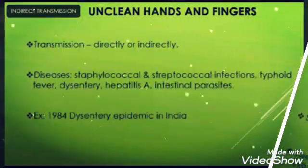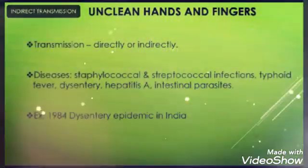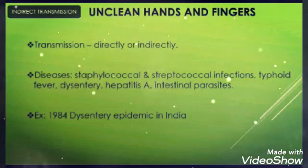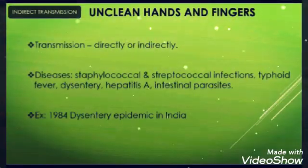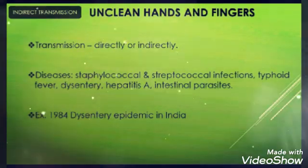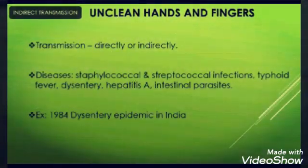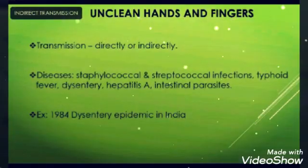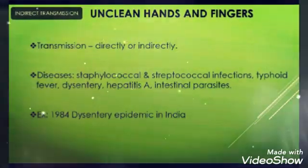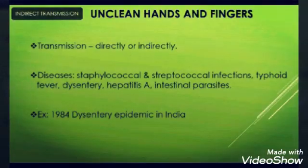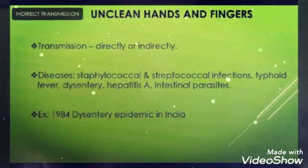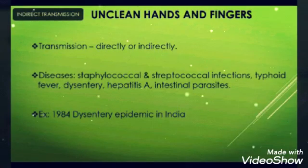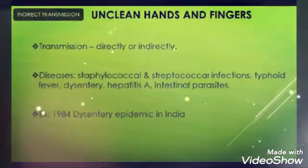Transmission via unclean hands and fingers: whenever we do not maintain personal hygiene, we can get certain disease conditions, which is counted as indirect transmission or secondary infection transmission. Diseases include staphylococcal and streptococcal infections, typhoid fever, dysentery, hepatitis A, and intestinal parasites. With intestinal parasites you mainly get vomiting and stomach cramps.